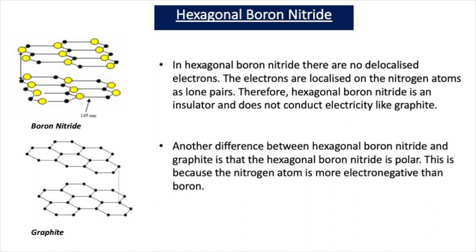Just like graphite, boron nitride has a giant structure with strong covalent bonds within the layers, so it has a high melting point. However, in hexagonal boron nitride there are no delocalized electrons — the electrons are localized on the nitrogen atoms as lone pairs. Therefore hexagonal boron nitride is an insulator and does not conduct electricity like graphite. Another difference is that hexagonal boron nitride is polar, because the nitrogen atom is more electronegative than boron. So boron is delta-plus and nitrogen is delta-minus. In graphite, carbon atoms next to each other have no difference in electronegativity, so it is not polar.